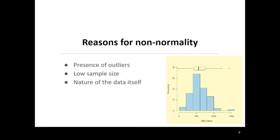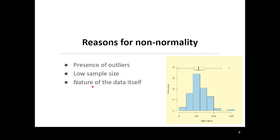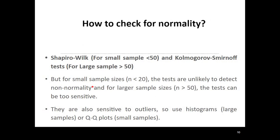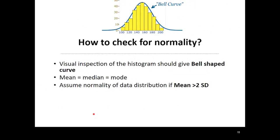Reasons we don't get normally distributed data include the presence of outliers, small sample size, and the nature of the data itself — for example, income data is usually not normally distributed. To check for normality, we use two statistical tests: the Shapiro-Wilk test when the sample size is less than 50, and the Kolmogorov-Smirnov test when the sample size is greater than 50. However, for samples less than 20 the tests are unlikely to detect non-normality, and for samples greater than 50 they can be too sensitive to outliers, so use histograms or QQ plots.